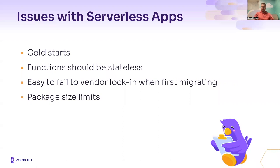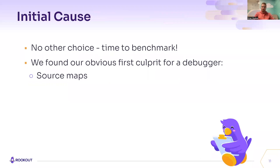Our biggest challenge was the challenge of having big cold start times. For those not familiar with the term cold start, it is how long it takes to initialize a new serverless worker with your app until it is ready to handle an incoming request. That includes the time to set up the worker itself, set up your runtime, and set up the different modules that comprise your application. So our first step was to understand what takes us so long to boot up, and we did it by benchmarking our application. We found our first culprit — quite obvious for a Node.js debugger: we take a lot of time parsing source maps.